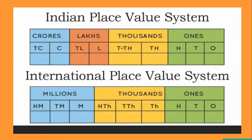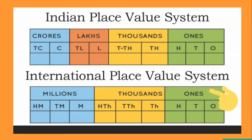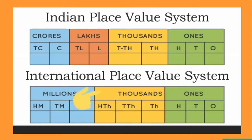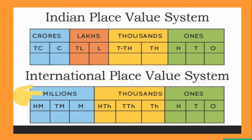In the international numeral system, places are grouped into ones, thousands, and millions. The first period is ones, consisting of three place values: ones, tens, and hundreds. The second period is thousands, consisting of three place values: thousands, ten-thousands, and hundred-thousands. The third period is millions, consisting of three place values: millions, ten millions, and hundred millions.